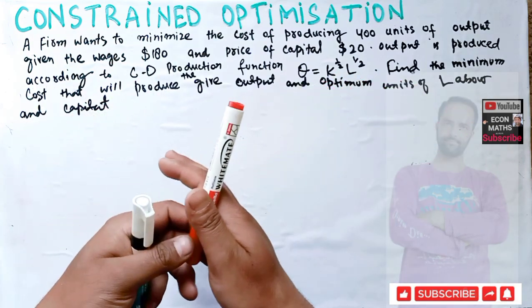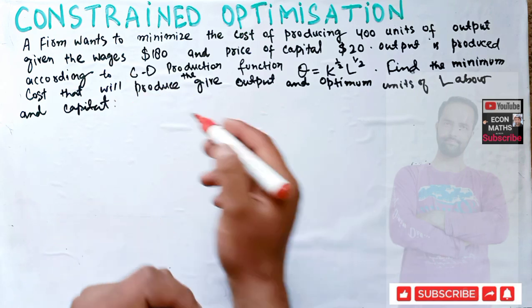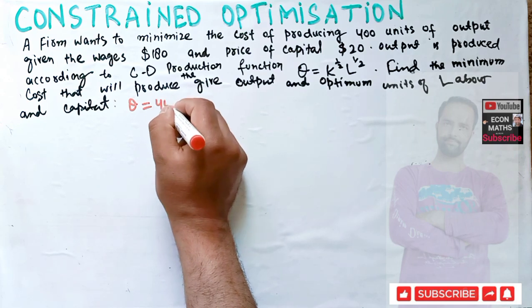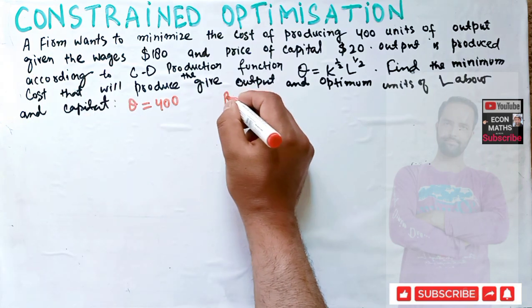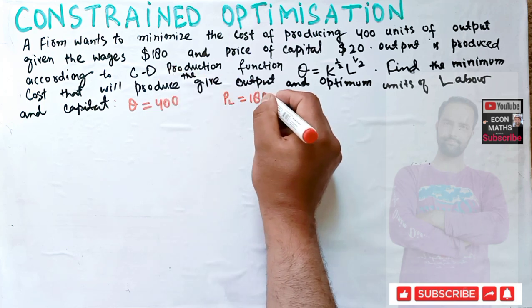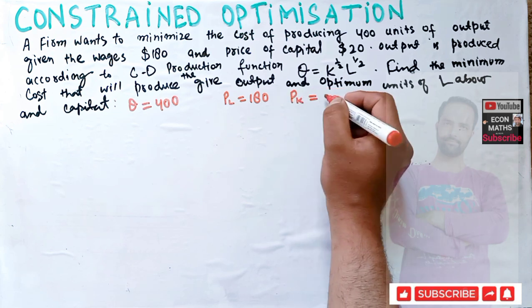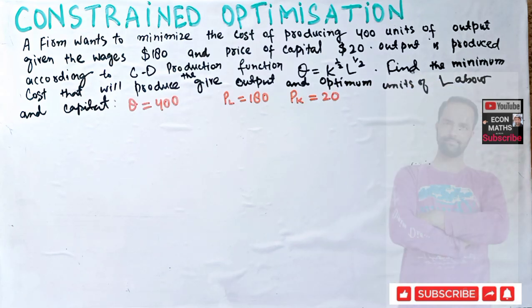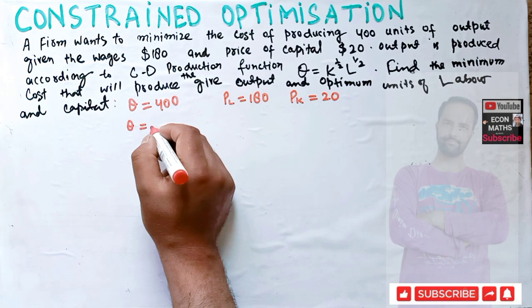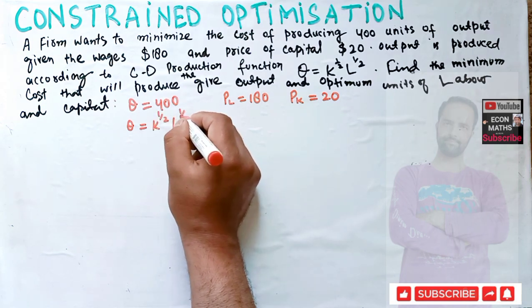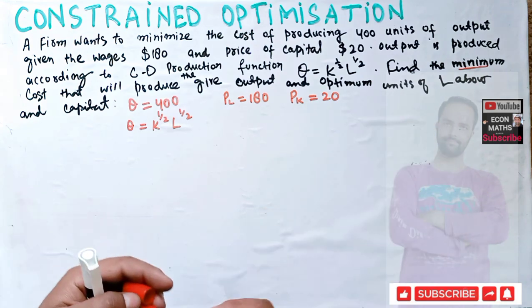We have a cost minimization problem. We are given that quantity to be produced q = 400. The wage rate (price of labor) is $180, and the price of capital P_k = $20. Our production function is given by the Cobb-Douglas form: q = K^(1/2) · L^(1/2). We need to find the minimum cost to produce the given output and the optimal units of labor and capital.